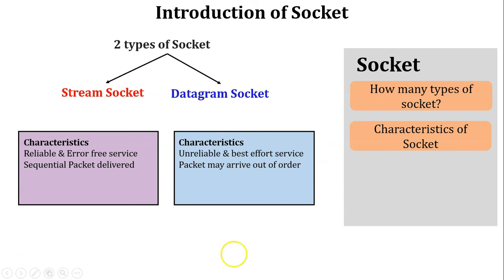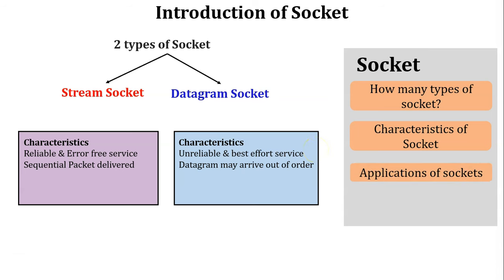The datagram socket characteristics are unreliable and best-effort service. Unreliable means lost or damaged datagrams are not retransmitted by the sender. Best-effort service means all datagrams reach the destination within a small period of time. Another characteristic is that datagrams may arrive out of order — the datagram socket cannot assign sequence numbers, and all datagrams are put on the network link simultaneously, reaching the destination quickly.